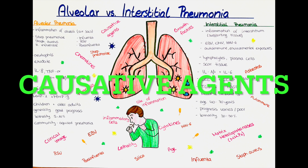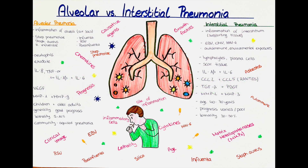What are the causative agents of alveolar and interstitial pneumonia? Alveolar pneumonia is typically caused by bacteria, viruses or fungi. The most common bacterial causes are Streptococcus pneumoniae, Staphylococcus aureus and Haemophilus influenzae. The most common viral causes are the influenza virus, the respiratory syncytial virus and the para-influenza virus. The most common fungal causes are Histoplasma capsulatum and Blastomyces dermatitidis.